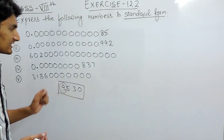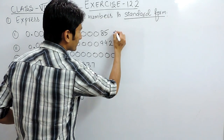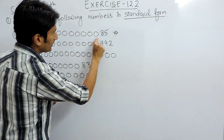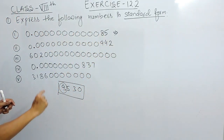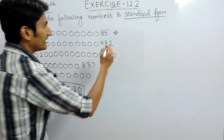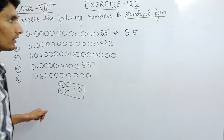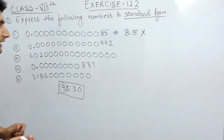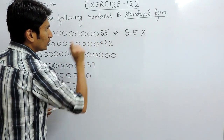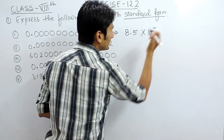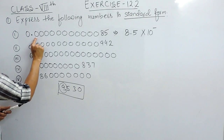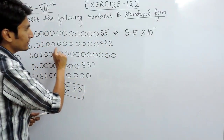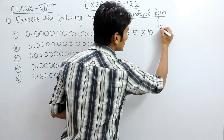Now because you are applying the decimal, let's find out what change it might cause. You have to shift the decimal so that there is only one digit on the left hand side. This can be written as 8.5, but because we are shifting the decimal to the right hand side, you have to write 10 raised to the power minus the number of digits you are shifting — that is 12 digits — so you write 10 raised to the power minus 12.